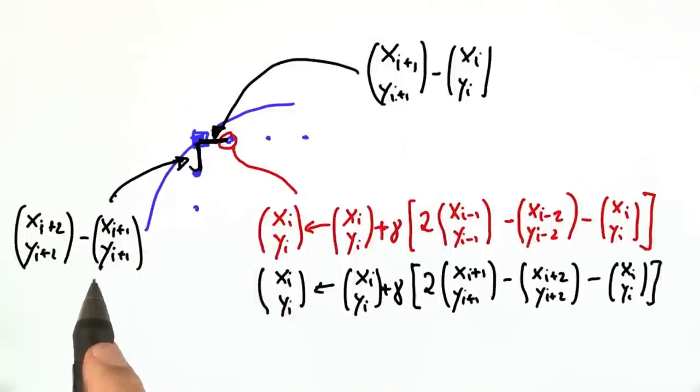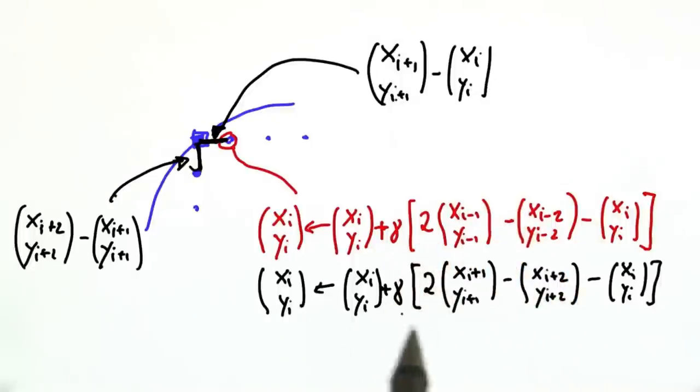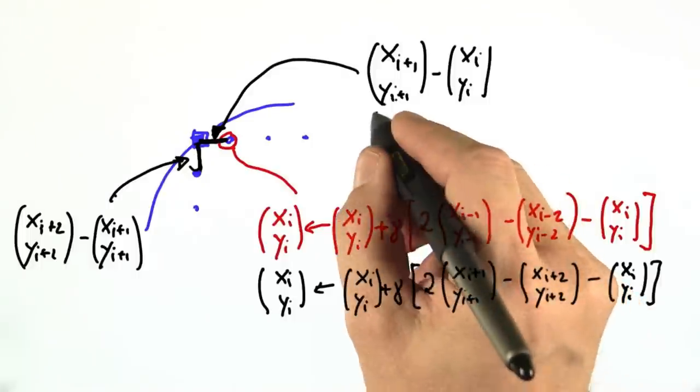If we set these to be equal and bring yi to the right side, then if you modify yi in proportion to this expression over here, we reduce the error. In fact, the expression in the bracket is the same as this one.